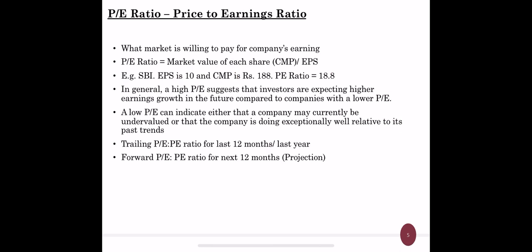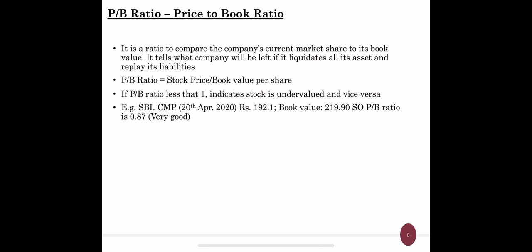Price to book ratio is a ratio to compare a company's current market share price to its book value. It tells what the company will be left with if it liquidates all assets and repays all its liabilities. If the PB ratio is less than one, it indicates that the stock is undervalued and you can go for an investment. For example, on 20th April 2020, the current market price of State Bank of India was 192.10 but its book value was 219.90, giving a PB ratio of 0.87 — so you can hold it in your portfolio.